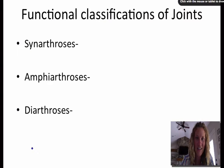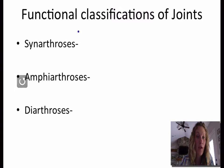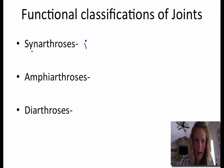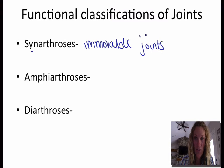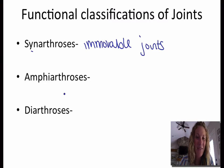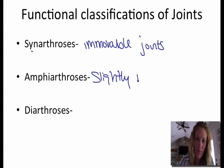We're going to look at the different functional classifications first. A functional classification: the first is synarthroses, which is a way to classify immovable joints. What's an immovable joint that you already know of? Hopefully you're saying sutures right now. Amphiarthroses are going to be slightly movable. And then diarthroses are going to be freely movable.